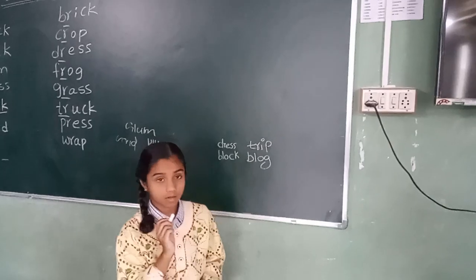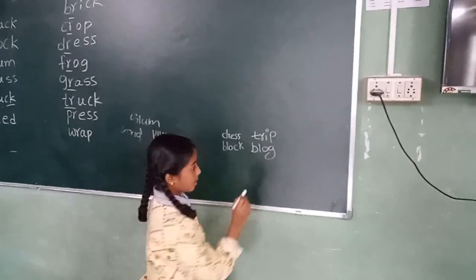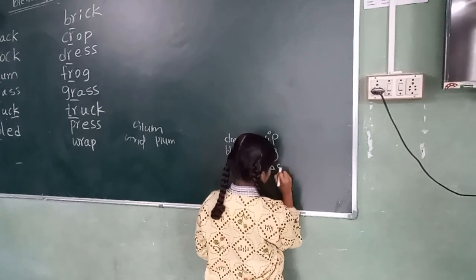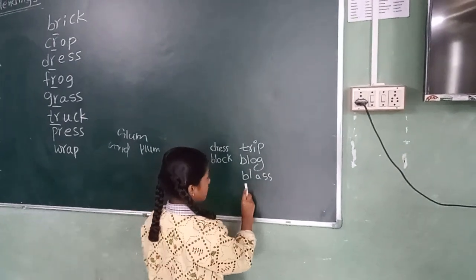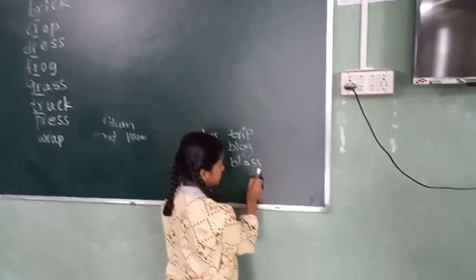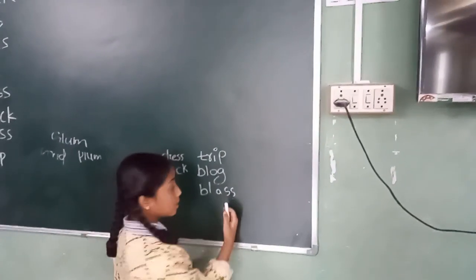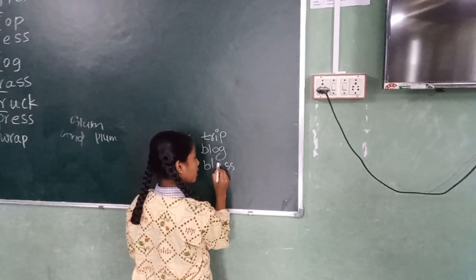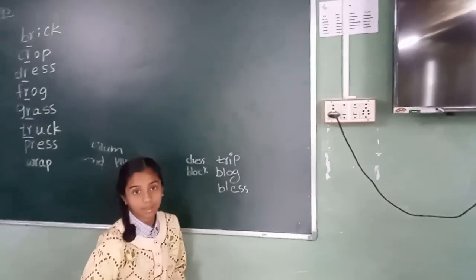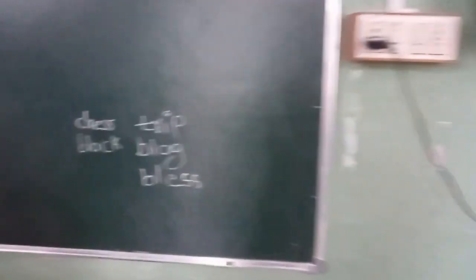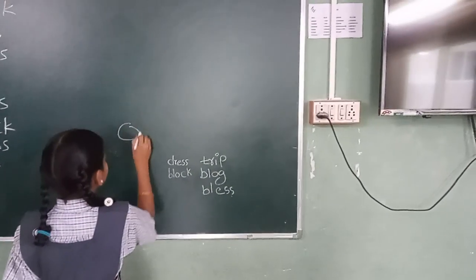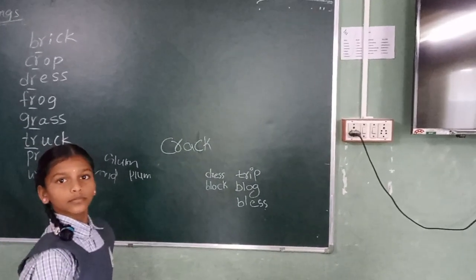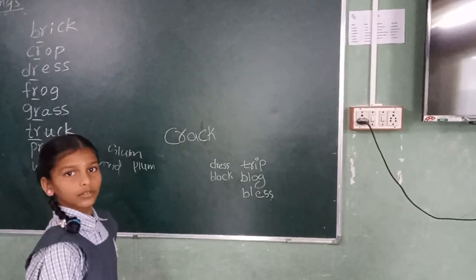Bless. Read sounds and write. Bless. Read and write. Read it — how will it be? In 'bless', which sound is there? You have to observe the sound. Bless — that's why I taught you. Next: crack. Crack. After short sound, if you hear the 'k' sound, you should write C and K at the end.